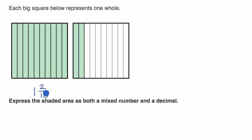We could just express one and two tenths as a decimal. We could say that's going to be one. And then we get to the tenths place. And then how many tenths do we have? We have two of them. So that's going to be 1.2.